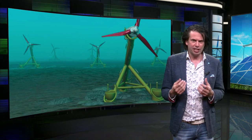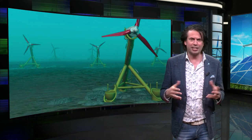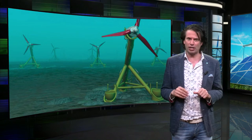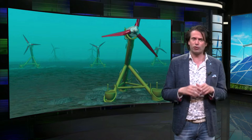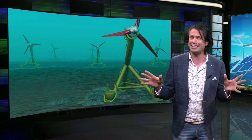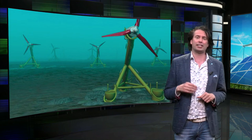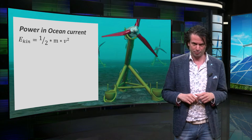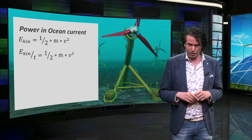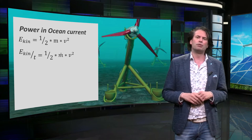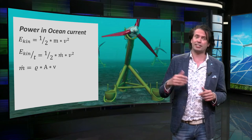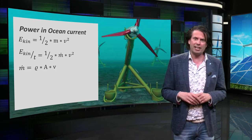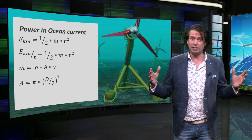For ocean current energy, this is quite straightforward. The kinetic energy of a moving fluid — ocean water in this case — will be converted to electrical energy by a turbine. The formulas for a rough estimation are exactly the same as for wind turbines. The kinetic energy equals half times the mass times the velocity of the water squared. Kinetic energy per second is the same thing as power. The mass flow is expressed by the density of the ocean water times the area of the turbine and the velocity of the water. The area can be calculated with the diameter of the turbine.